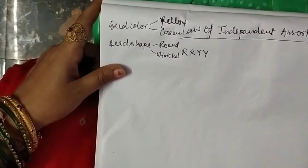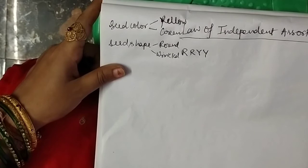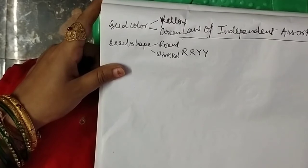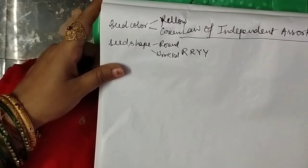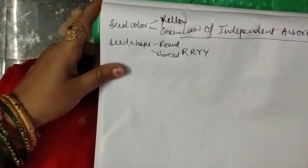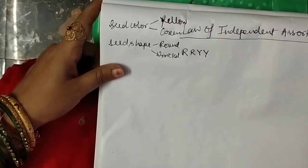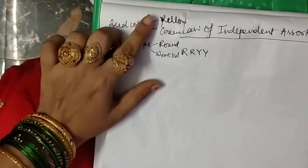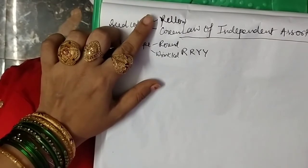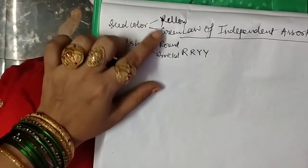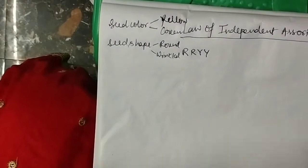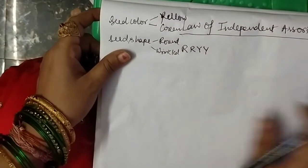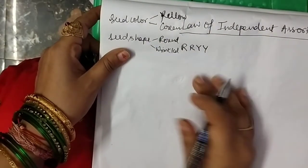First is seed color, which has two variants: yellow is dominant, indicated by capital Y, and green is recessive, indicated by small y. Second is seed shape: round is dominant, indicated by capital R, and wrinkled is recessive, indicated by small r. So Mendel took these two characters in pairs.